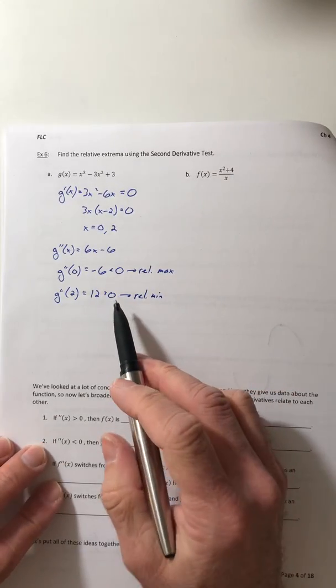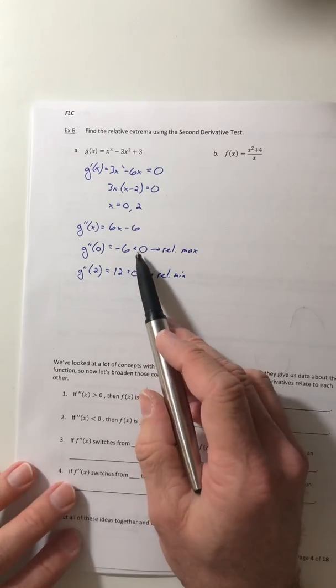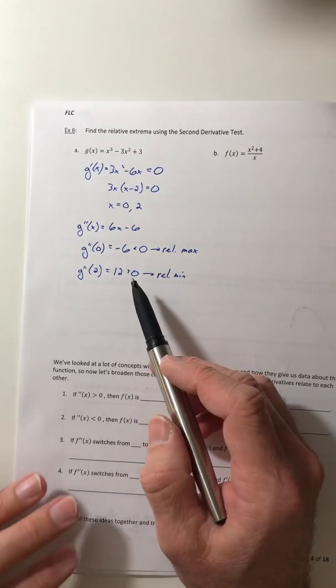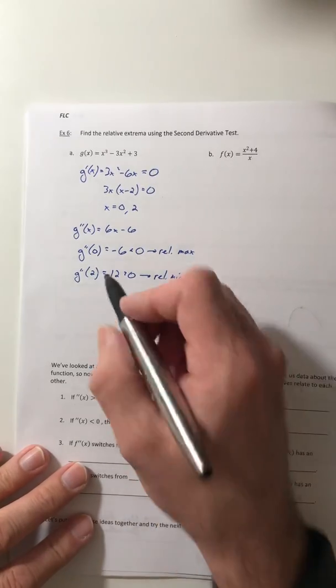Again, so it is a little bit counterintuitive, or at least for my brain. If it comes out as a negative, I want to associate that with a minimum instead of a maximum, so you've got to make sure that you're getting it straight.